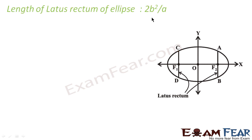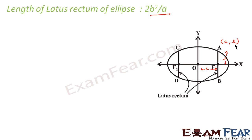The length of the latus rectum is 2B² / A. We will prove this. Let's assume this length is L, so AF length is L. The coordinates of point A will be (C, L).